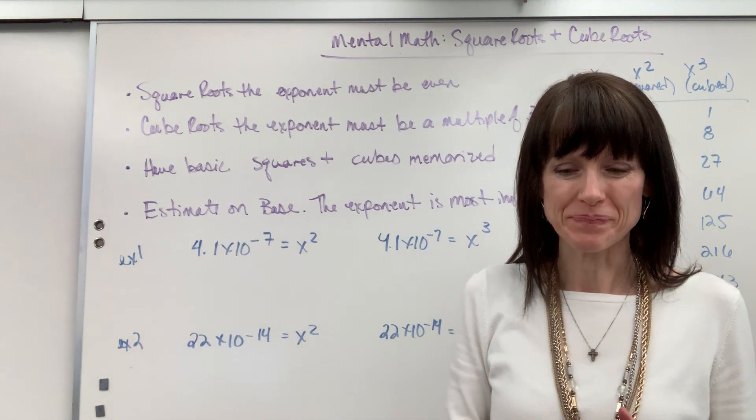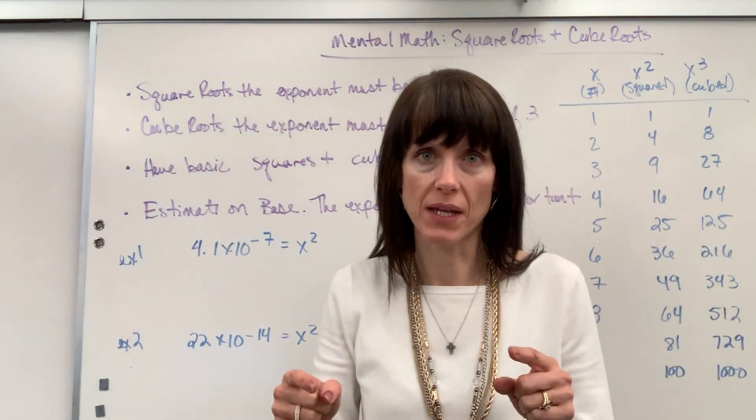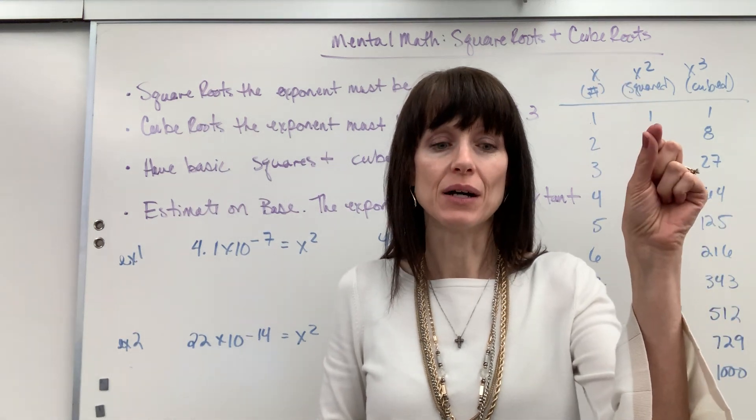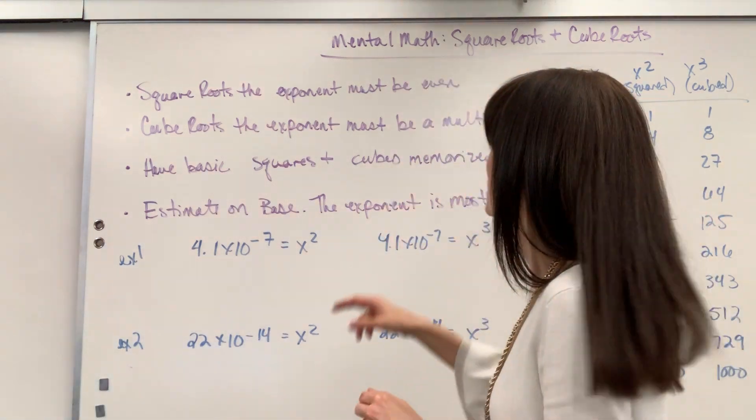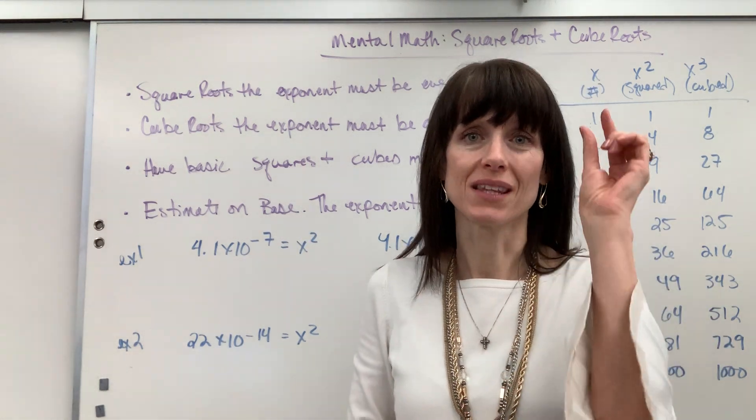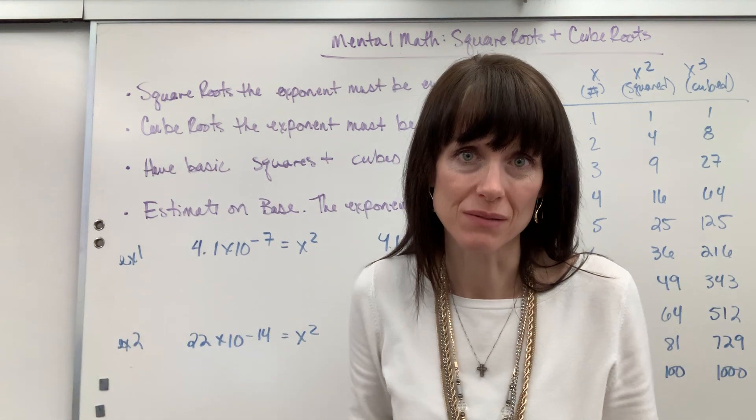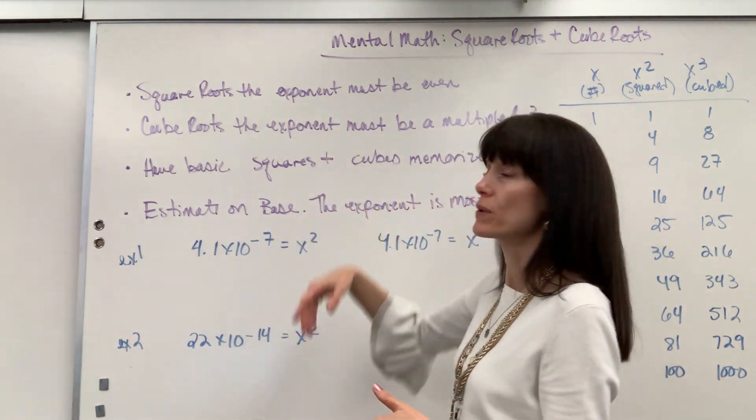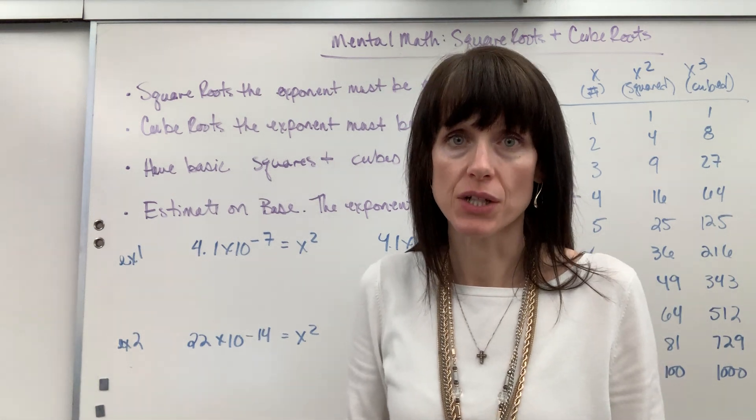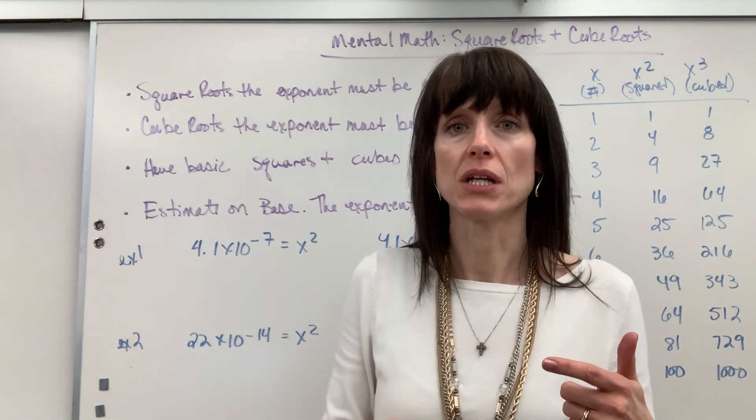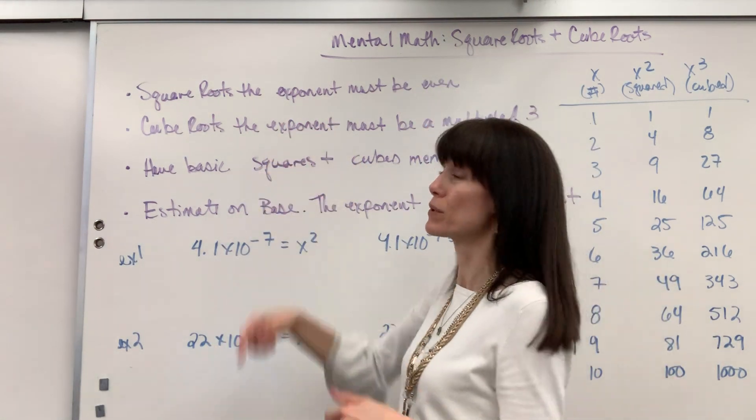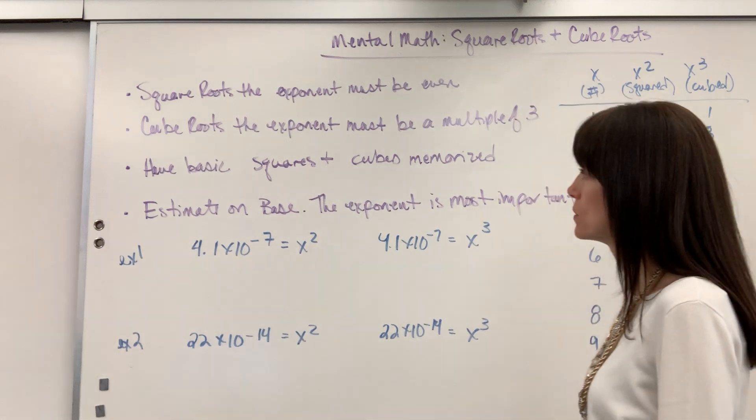Where this comes from: when you square something and you multiply that base 10, you add the exponents. So when we do the square root, when I take the square root of it, you just take the exponent and divide it by 2. Same principle - when you take the cube root, you divide it by 3. So it is infinitely easier to manipulate and change the scientific notation so that square roots are always even and cube roots have to be a multiple of 3.